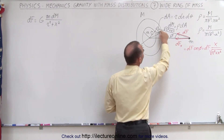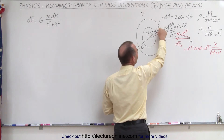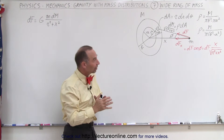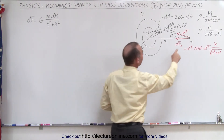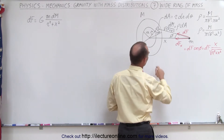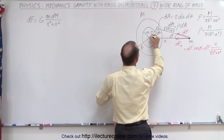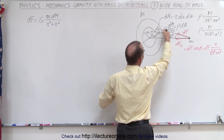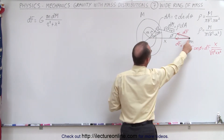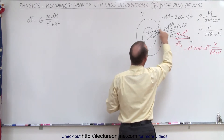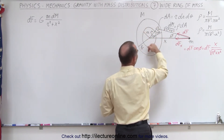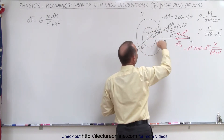The distance to any small area element dA, which can be written as r dr dθ in cylindrical coordinates, is the square root of r² + x², since this is the hypotenuse of the right triangle. The angle between the line from the center to the area element is called φ, and θ is the angle that goes all the way around the disc.